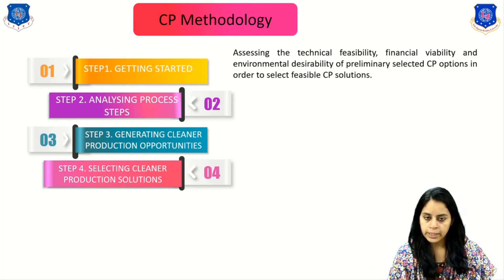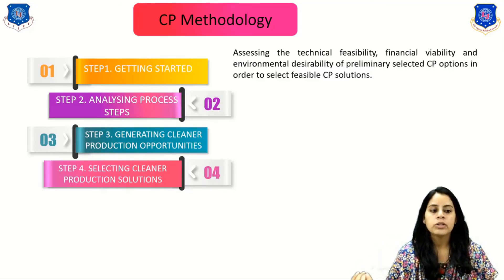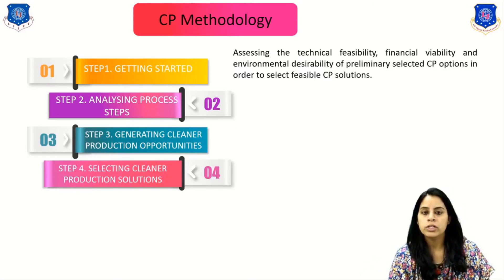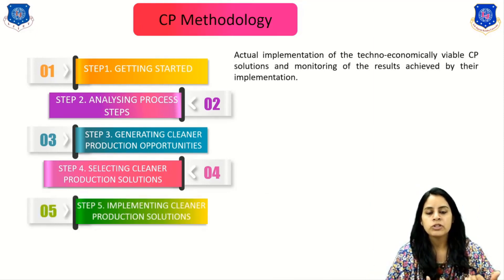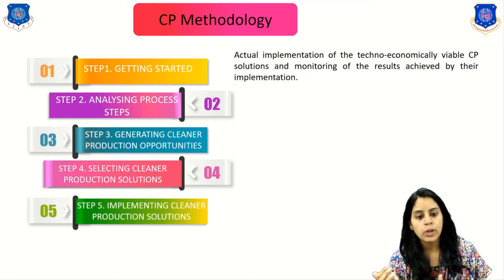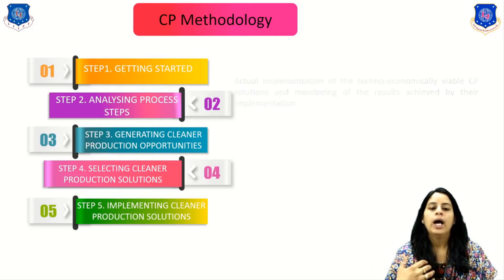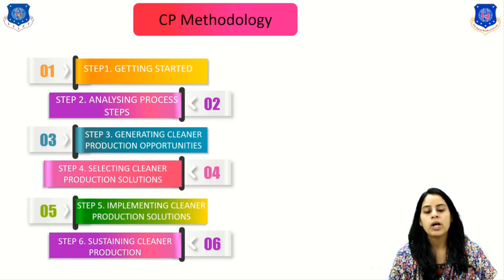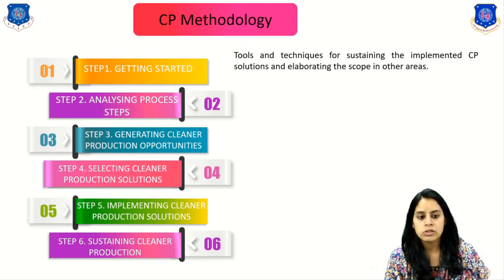In step three we identify opportunities, and in step four we find solutions for cleaner production. Step four involves assessing the technical feasibility, financial viability, and environmental desirability of the preliminary selected cleaner production options in order to select the feasible cleaner production solutions. Step five is implementing the cleaner production solution: actual implementation of the technically and economically viable cleaner production solution and monitoring the results achieved by that implementation. Step six is sustaining the cleaner production — using tools and techniques to sustain the implemented cleaner production solution and elaborating the scope into other areas.